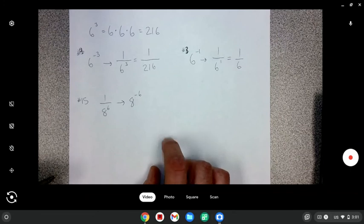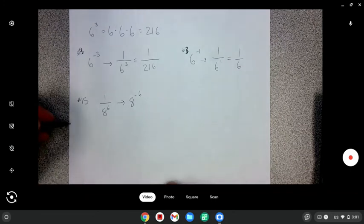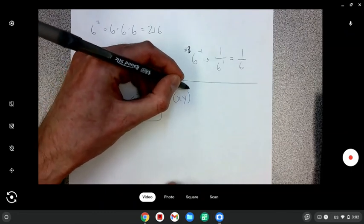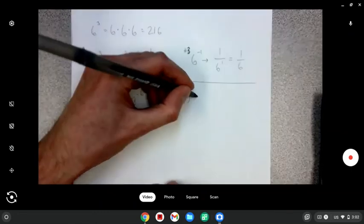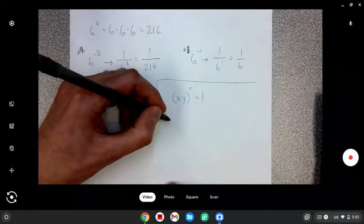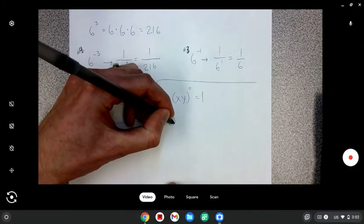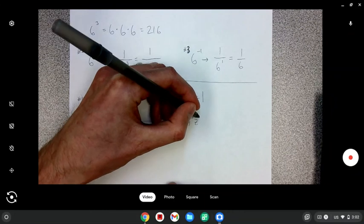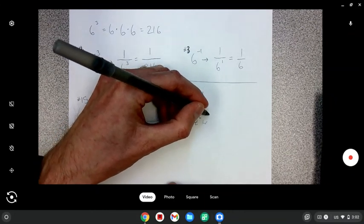So there you go. That's how you deal with those negative exponents. One other comment I'll make is that anything to the zero power is always one. It doesn't matter how big of a jumble of stuff. I'm just making stuff up here.